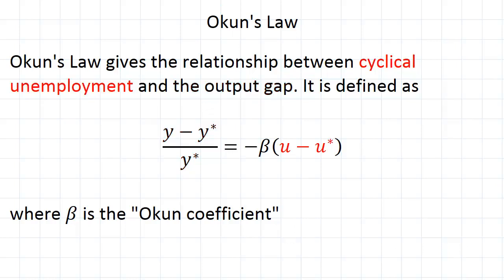Then on the right hand side we've got cyclical unemployment. This is just the difference between actual unemployment and the natural rate of unemployment, which is composed of frictional unemployment and structural unemployment.